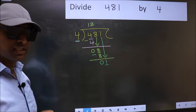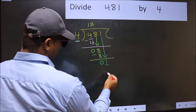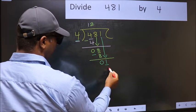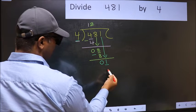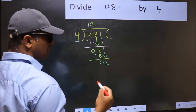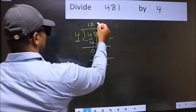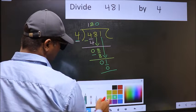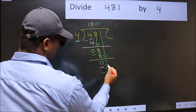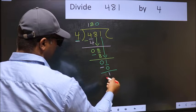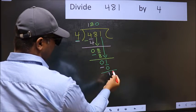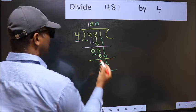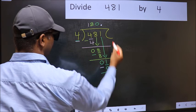Instead, what you should think of doing is: what number should we write here? If I take 1 here, I will get 4, but 4 is larger than 1. So what we should do is take 0. So 4 into 0 is 0. Now you should subtract: 1 minus 0 is 1. Over here, we did not bring any number down, and 1 is smaller than 4. So now you can put a dot and take 0.